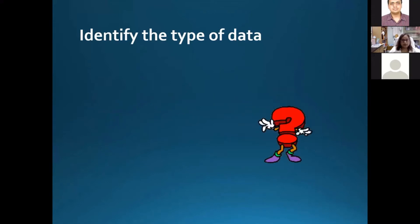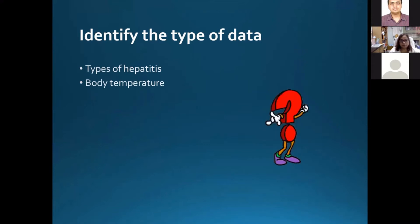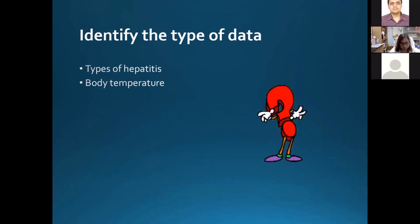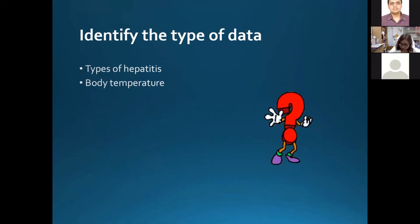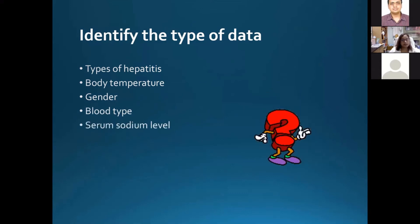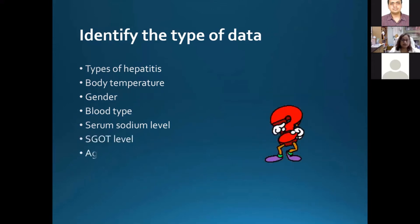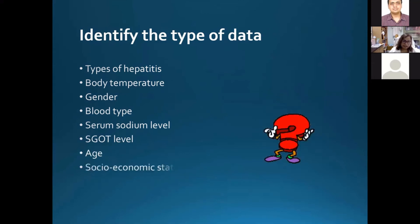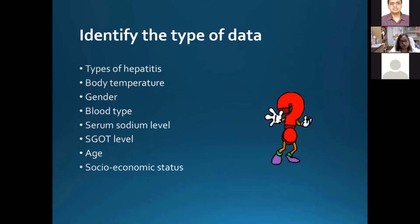Let me give some examples. Types of hepatitis — hepatitis A, B, C — is nominal data with mutually exclusive, unordered categories. Body temperature is quantitative continuous data. Gender is nominal data. Blood type is also nominal. Serum sodium levels and SGOT levels are quantitative continuous data. Age is quantitative continuous. Socioeconomic status has an inherent order — lower, middle, higher class — so it becomes ordinal qualitative data. Identifying your type of data is the first step whenever calculating sample size.